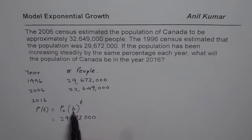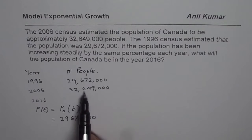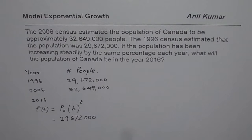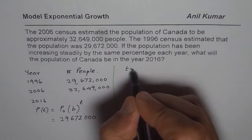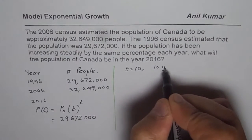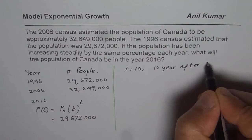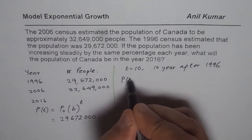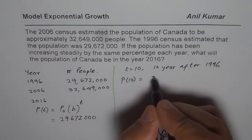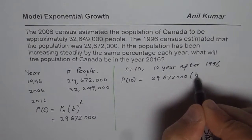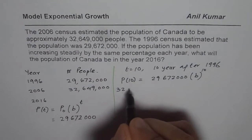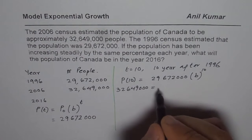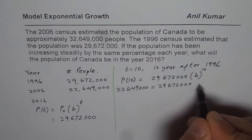To find b, we know that after 10 years the population was 32,649,000. Here t is the time after the year 1996, so at 1996 t equals 0. Ten years after 1996 gives t equals 10, so P(10) equals 29,672,000 times b to the power of 10. This population is given as 32,649,000, so: 32,649,000 equals 29,672,000 times b to the power of 10.